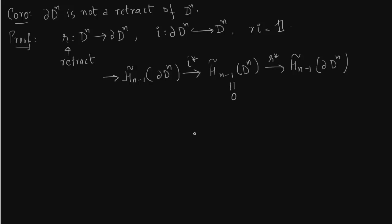Now in this case, homotopically equivalent to a point, therefore it is zero. But the other two ends of the sequence are integers. This is integers and this is integers.